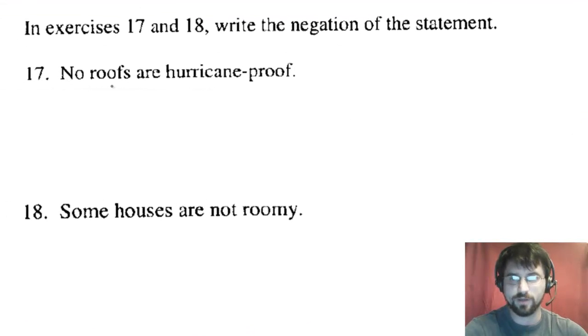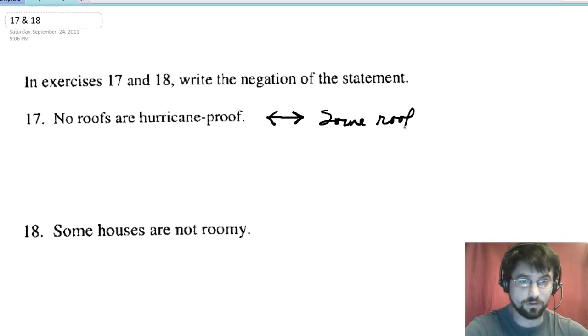Oh, these are easy. No roofs are hurricane proof. That's a lie. But what do they want me to do? They want me to negate that. The negation of none is some. Some roofs are hurricane proof like that.